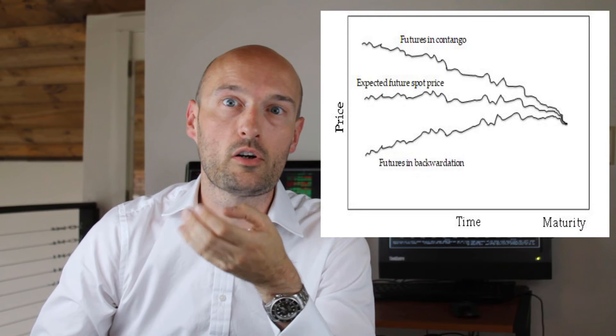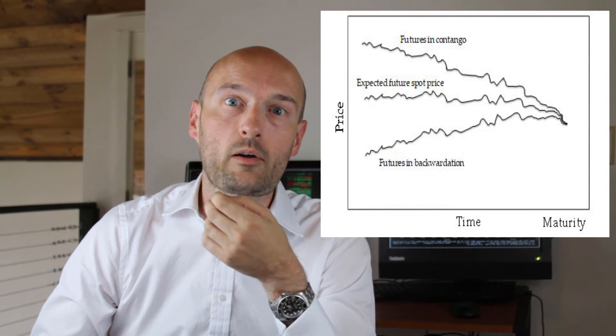Hedgers are obviously interested in reducing risk, and Keynes argued that they will accept losing a little bit of money on their forward contracts in return for reducing their risk. Equally, in order to attract speculators into the market, there should be a little bit of built-in profit for them. So Keynes argued that if speculators are holding a net long position, it must thus be the case that the expected future spot price is greater than the forward price. This market situation where the futures price is less than the expected spot price is referred to as normal backwardation.